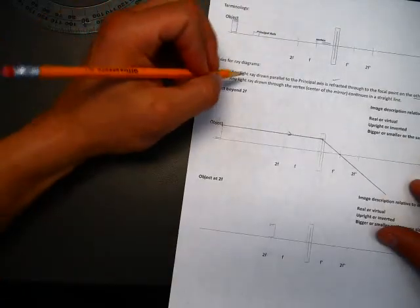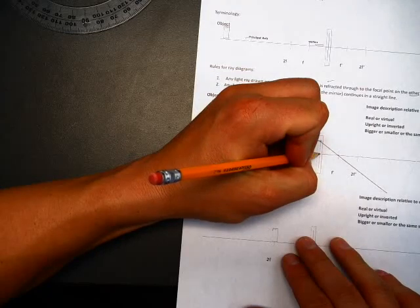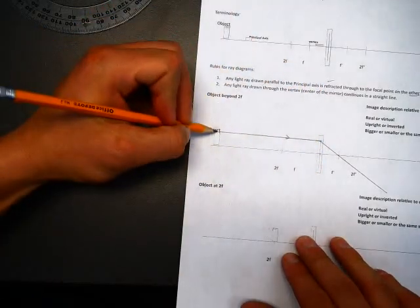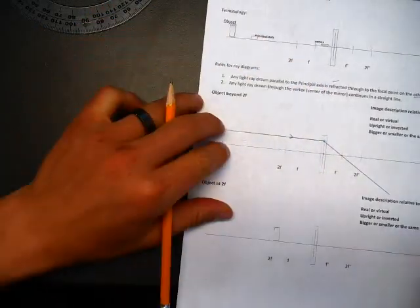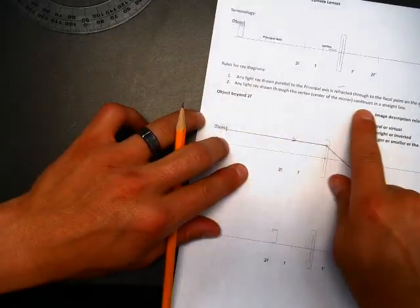Second rule: any light ray drawn to the vertex - the center of the mirror - continues in a straight line. The vertex is right here, the very center of the mirror. From that exact same point, it's going to continue on in a straight line.